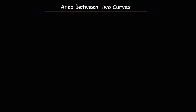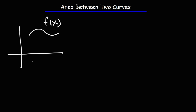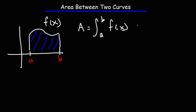In this video we're going to talk about how to calculate the area between two curves. Let's go over the basics. Let's say we have some function f of x and we want to find the area under the curve from a to b — the area of the shaded region. The area is simply the definite integral from a to b of f of x dx.